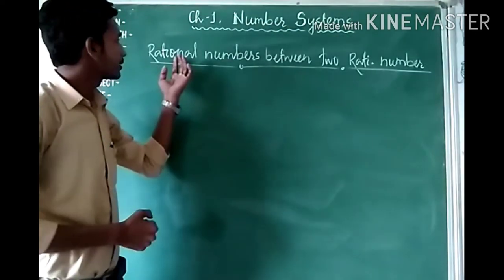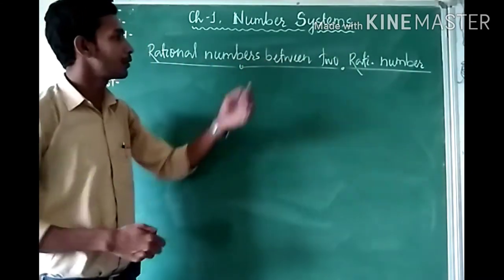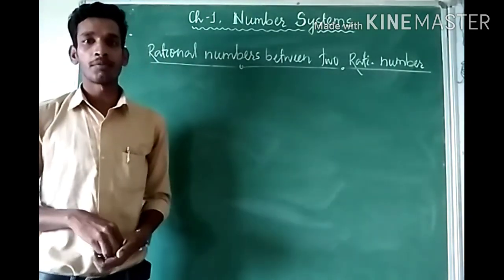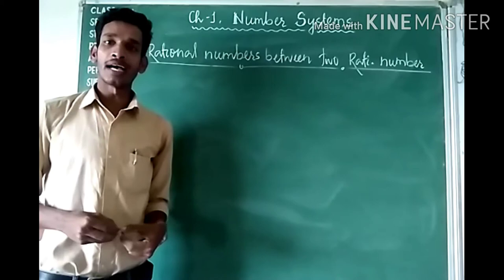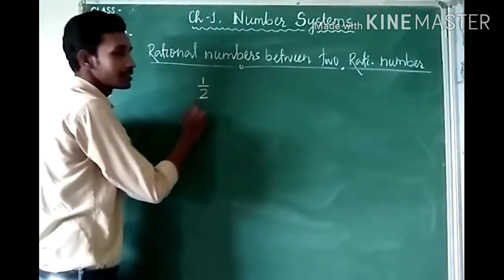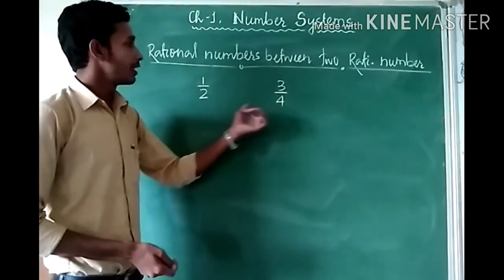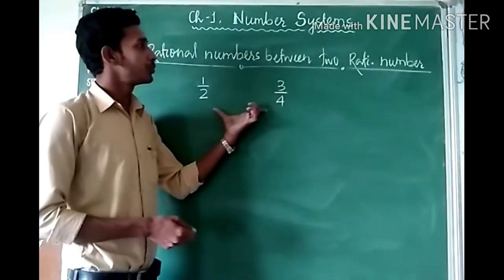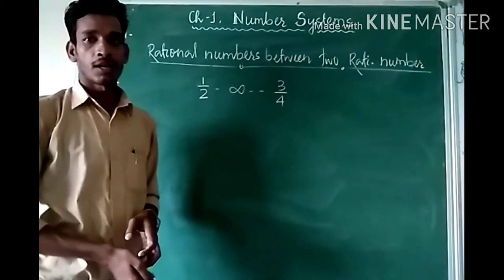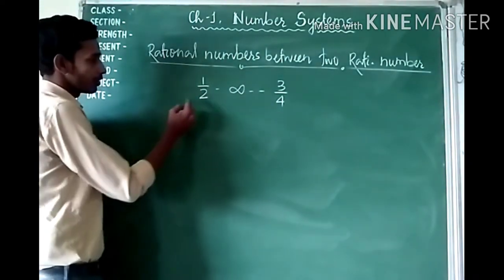The next topic we are going to discuss is rational numbers between two rational numbers. We know from Class 8 that there are many rational numbers between any two rational numbers. For example, between 1/2 and 3/4, there are infinitely many rational numbers. But how can we find them?